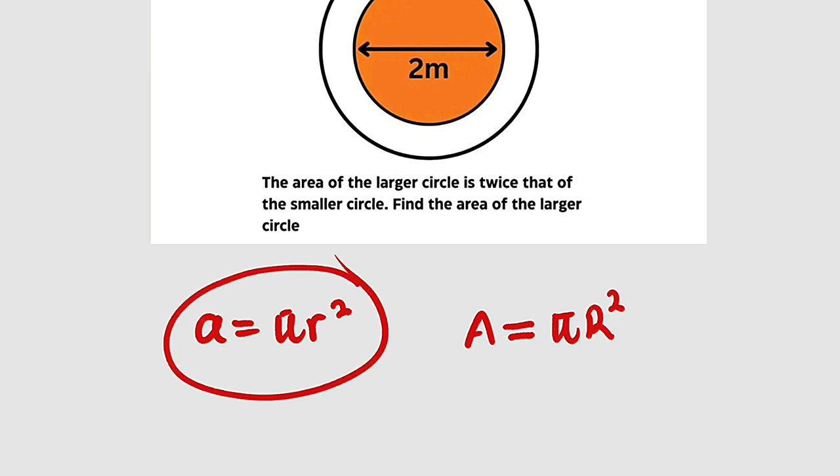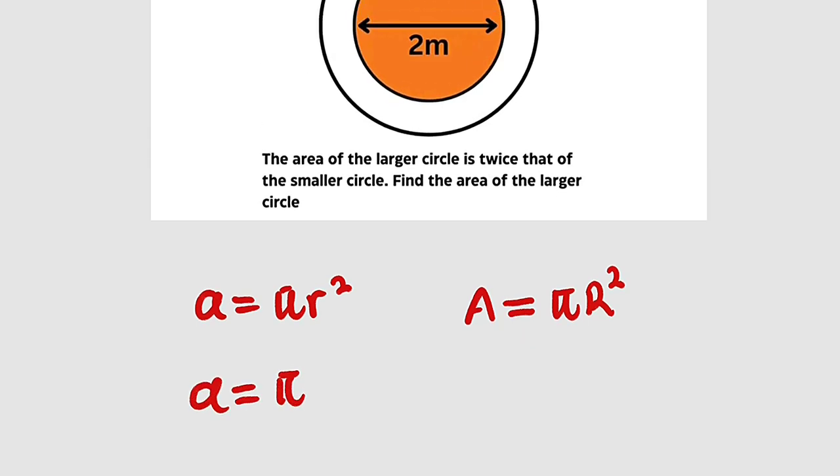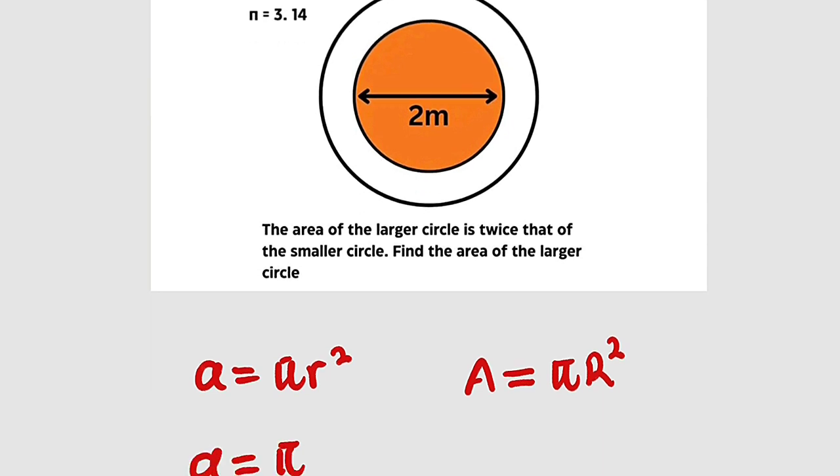So let's begin with this one. A is equal to pi. What is r? Since the diameter is 2 meters, radius is half of the diameter. Therefore, if you divide 2 meters by 2, you have 1 meter.